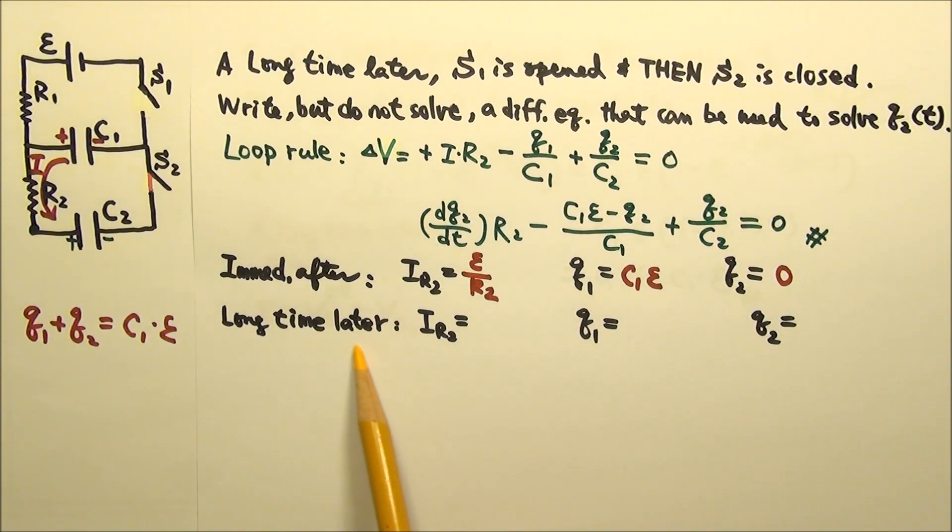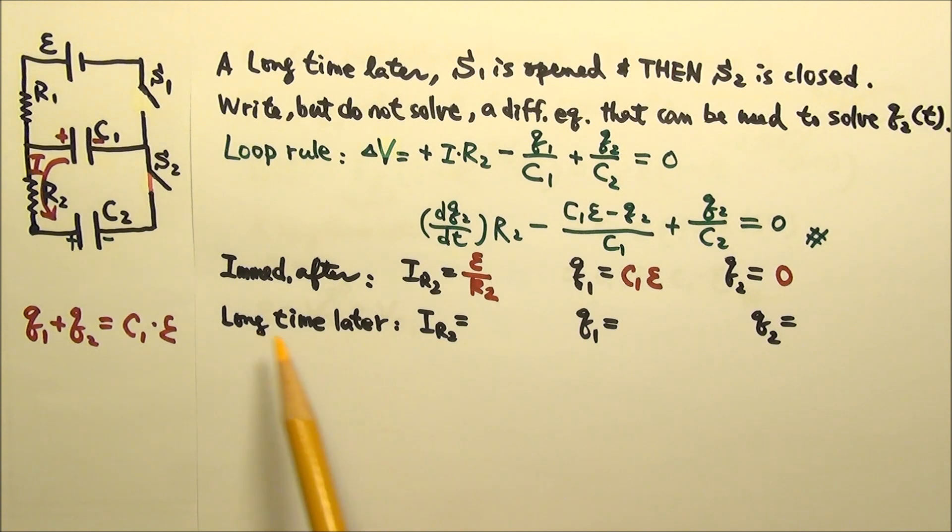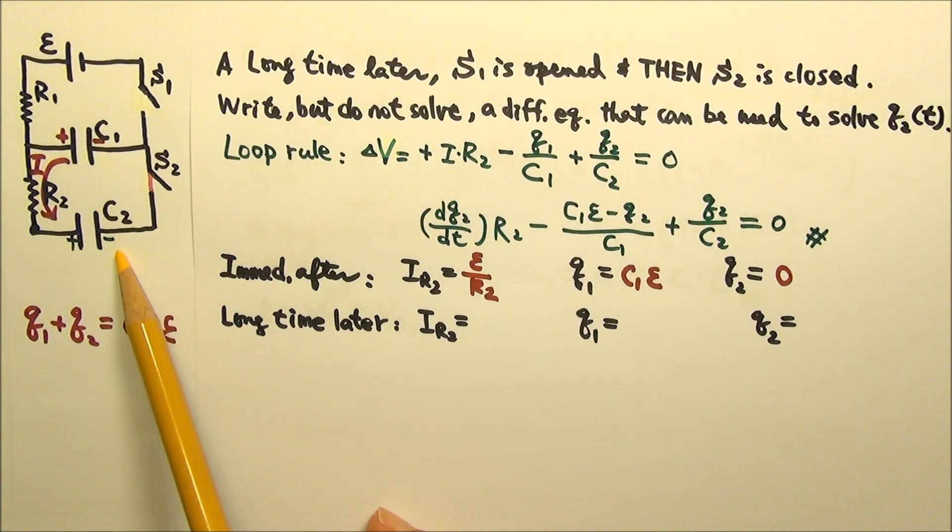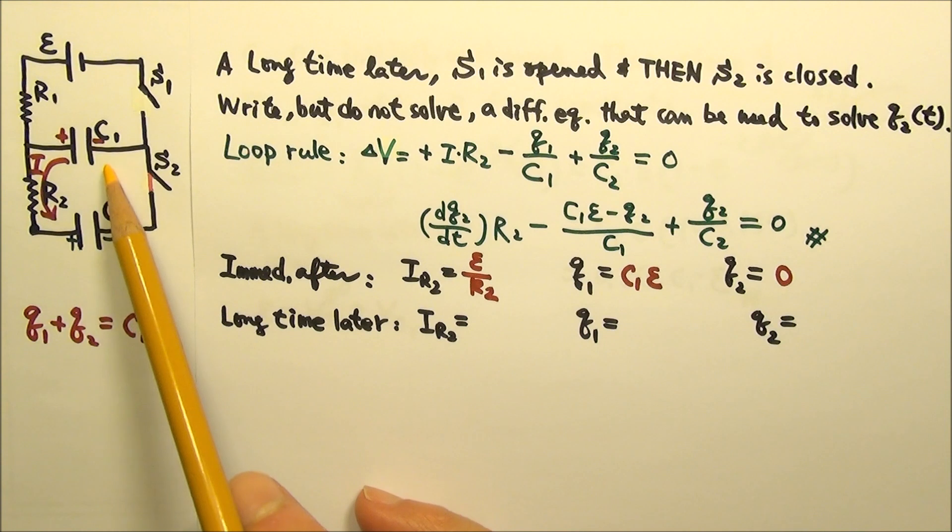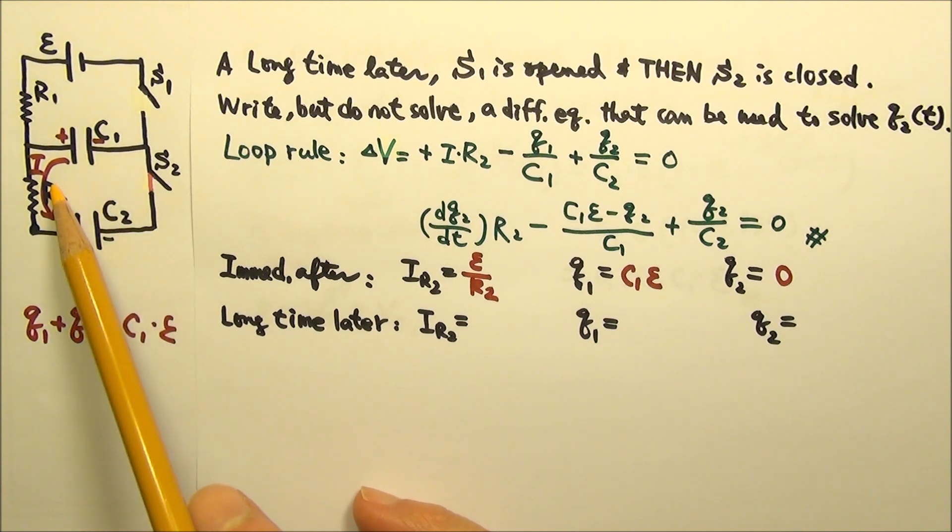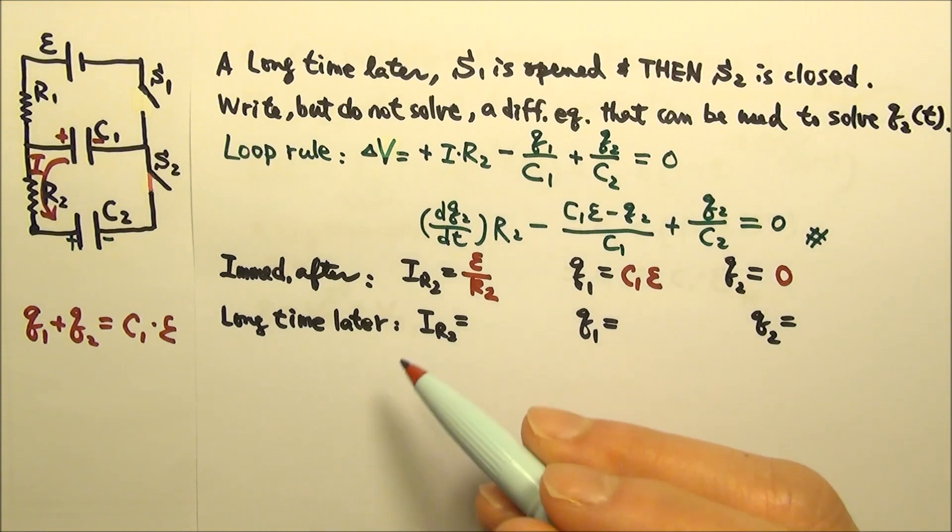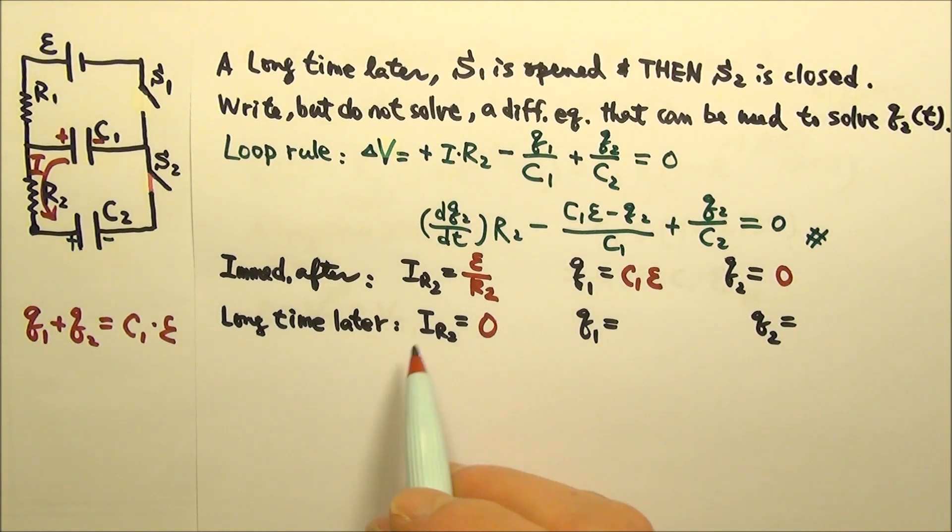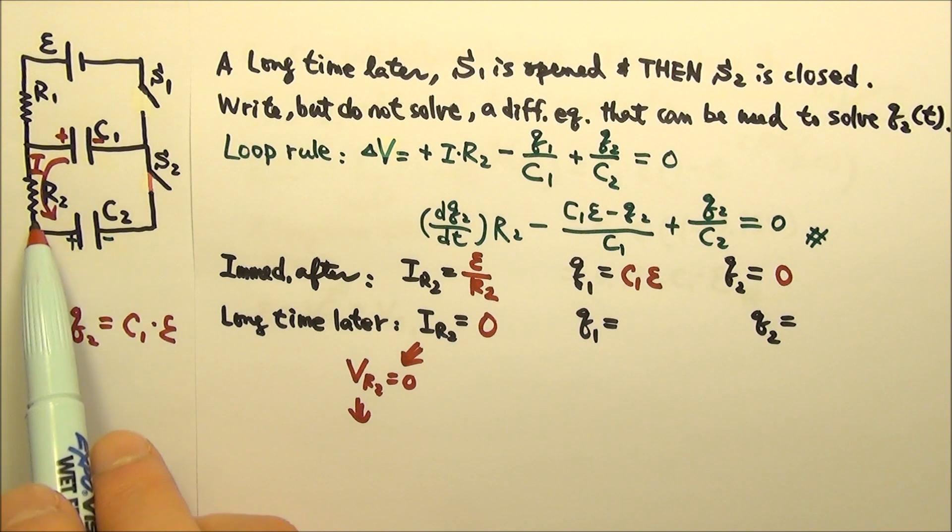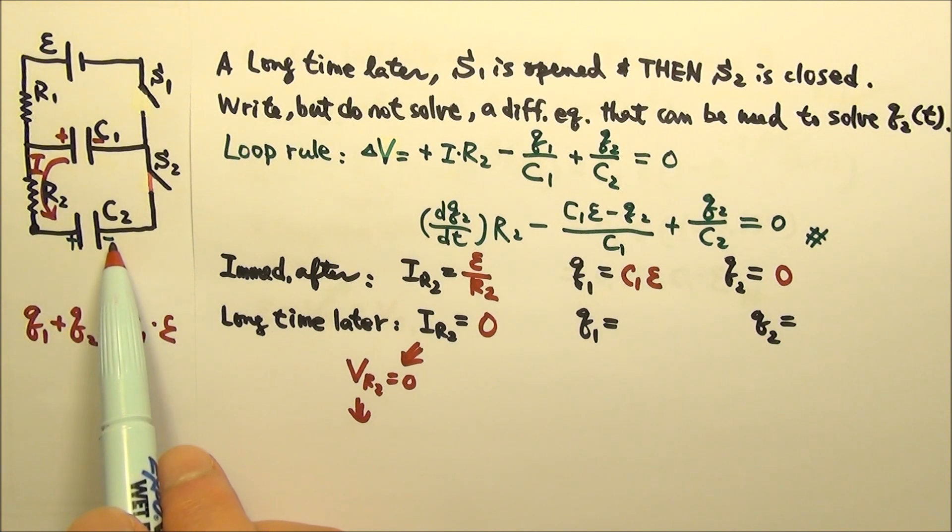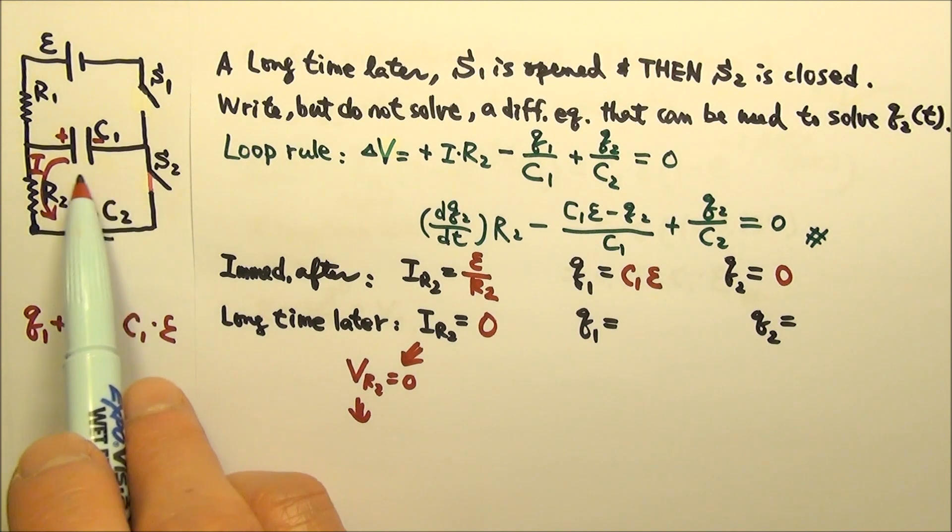How about a long time later? A long time after a change is made, the capacitors have either done charging or done discharging. So there is no more charging or discharging current. So the current through R2 is 0. Since R2 gets 0 current, that means R2 gets 0 volts.